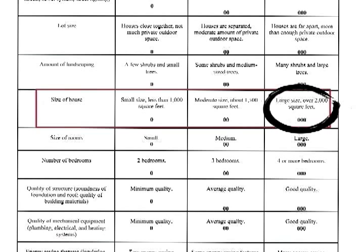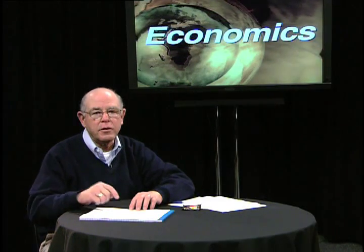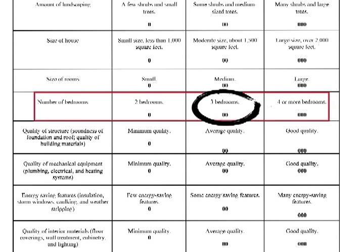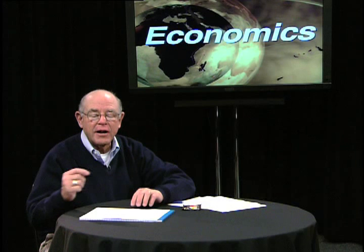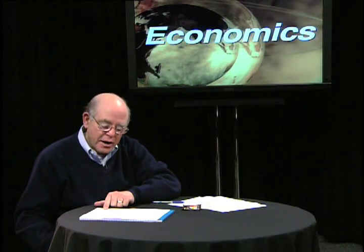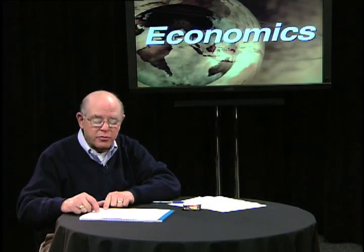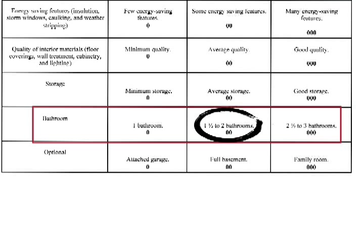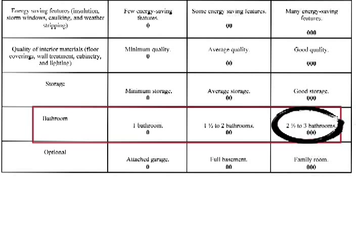If they look at the number of bedrooms: column A gives them two bedrooms — they circle one zero; column B gives them three bedrooms — they circle two zeros; column C gives them four or more bedrooms — they circle three zeros. For bathrooms, column A gives them one bathroom, column B gives one and a half to two bathrooms, or column C gives two and a half to three bathrooms, and they circle the corresponding zeros.